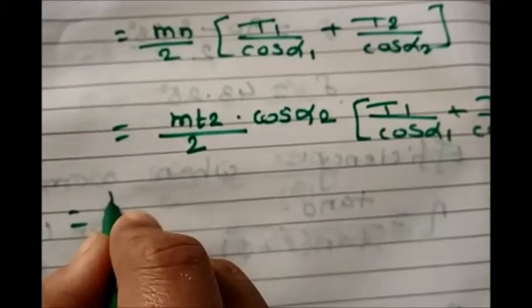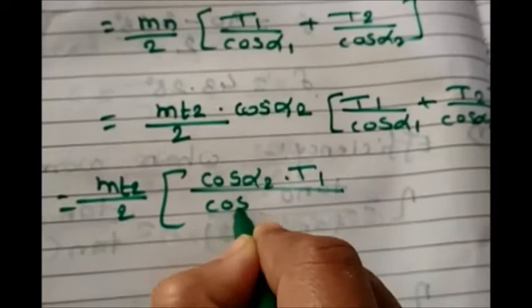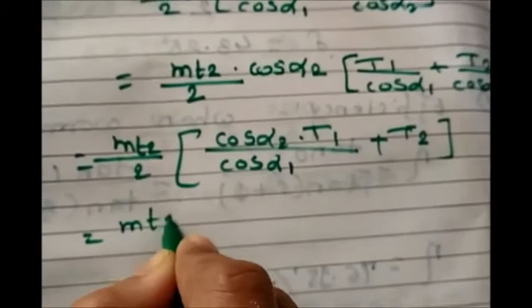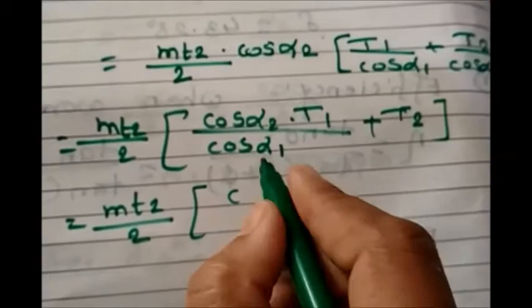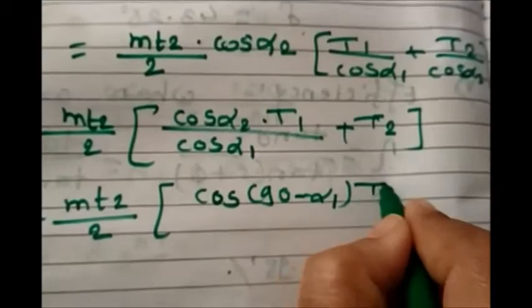Multiplying cos α2 inside the bracket: L = (mt2/2) · [cos α2·t1/cos α1 + t2], since cos α2 cancels with cos α2 in the second term, leaving only t2. Now, since the shaft angle is 90°, we substitute α2 = 90° − α1, giving: L = (mt2/2) · [cos(90° − α1)·t1/cos α1 + t2].